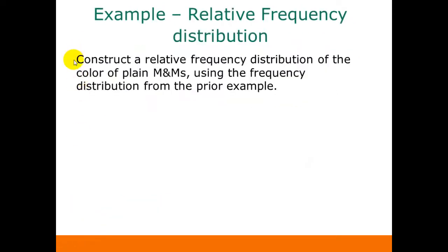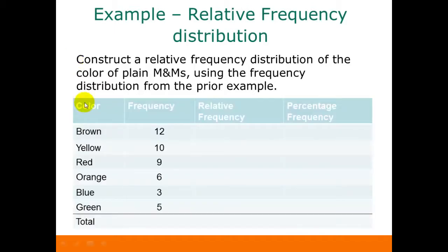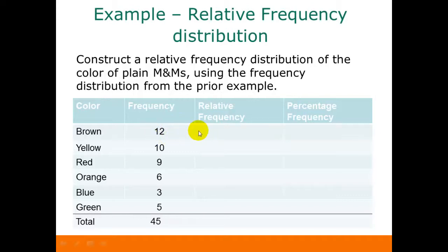Here's an example of creating a relative frequency distribution. We're going to construct a relative frequency distribution of the color of plain M&Ms using the frequency distribution we already had. To find our relative frequencies, we need the total of all the frequencies — the total number of M&Ms in the bag. If we add up all the frequencies, we get 45. So there were 45 M&Ms in the bag. Now to get our relative frequencies, we take each category frequency and divide it by our total, which is 45.